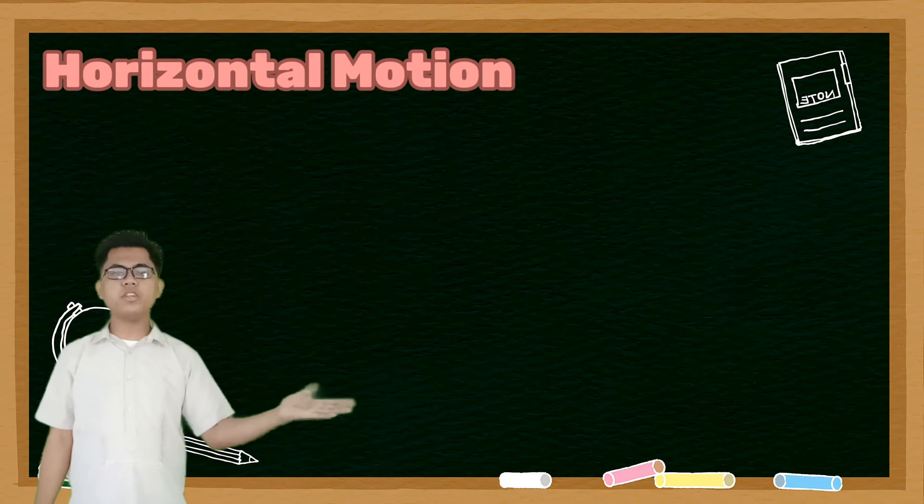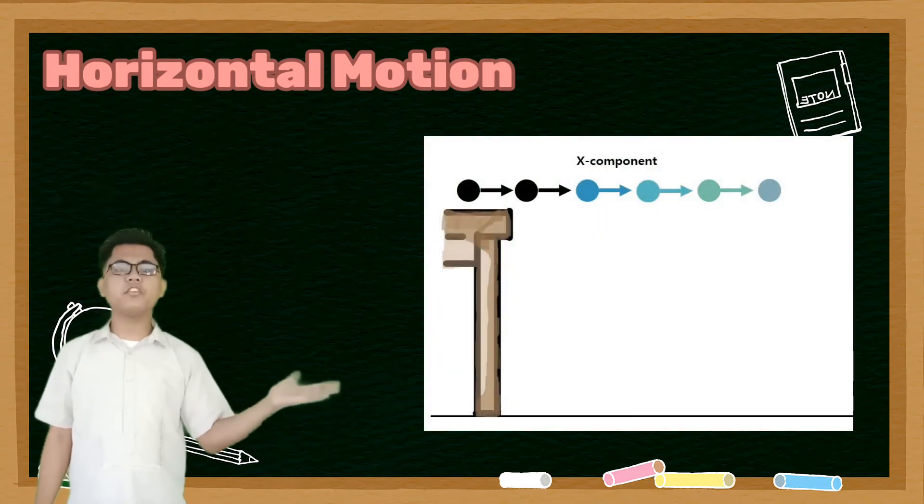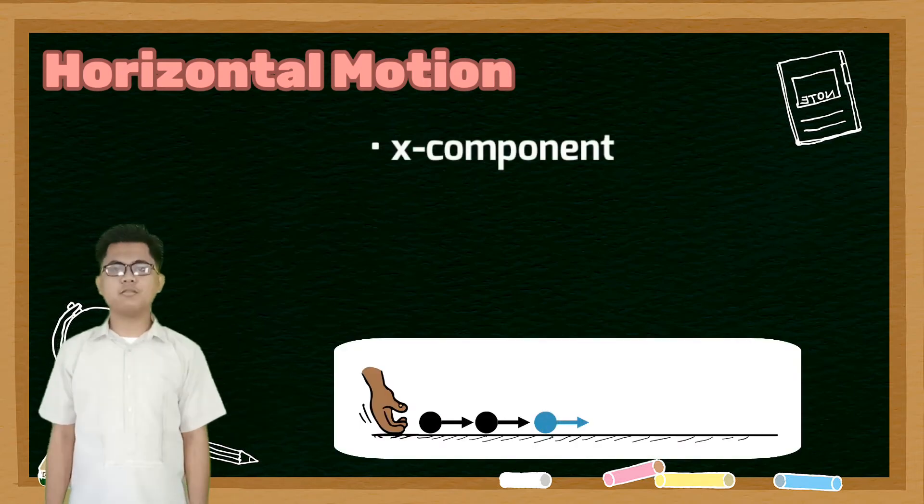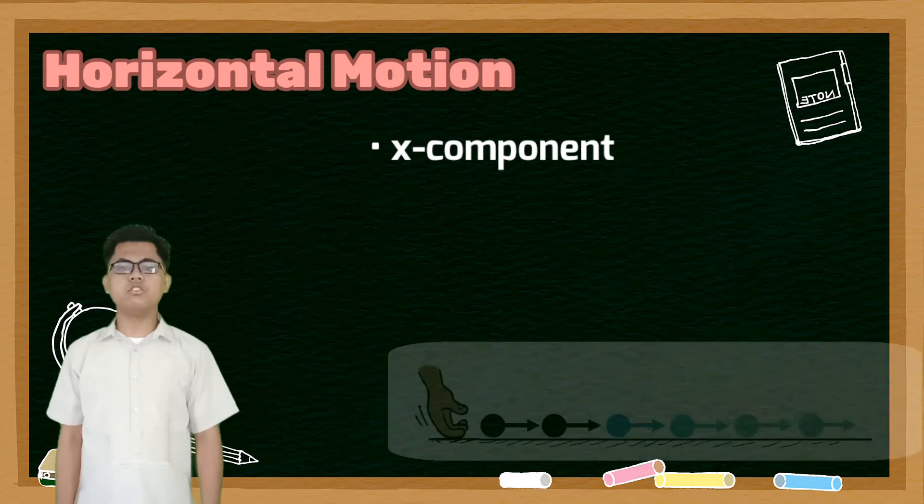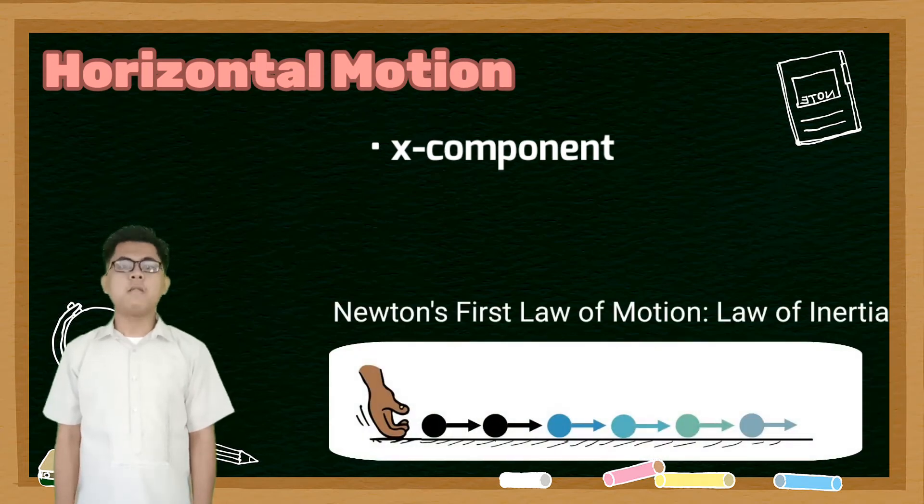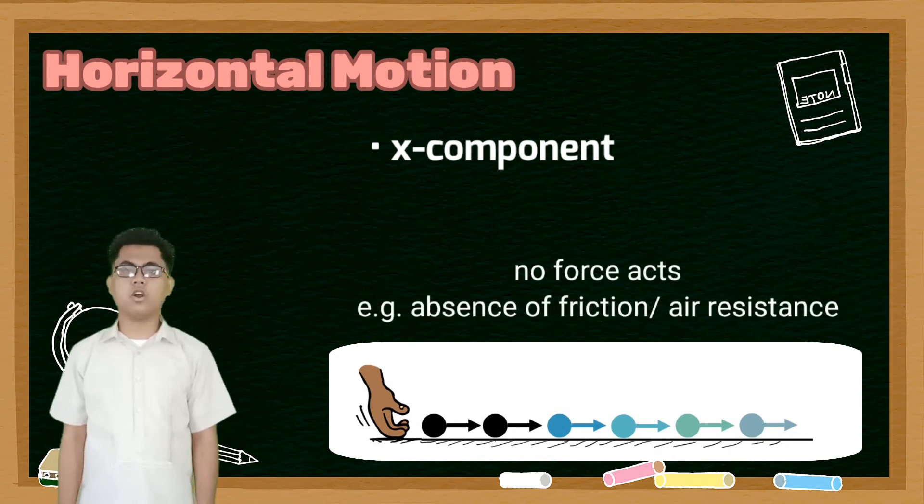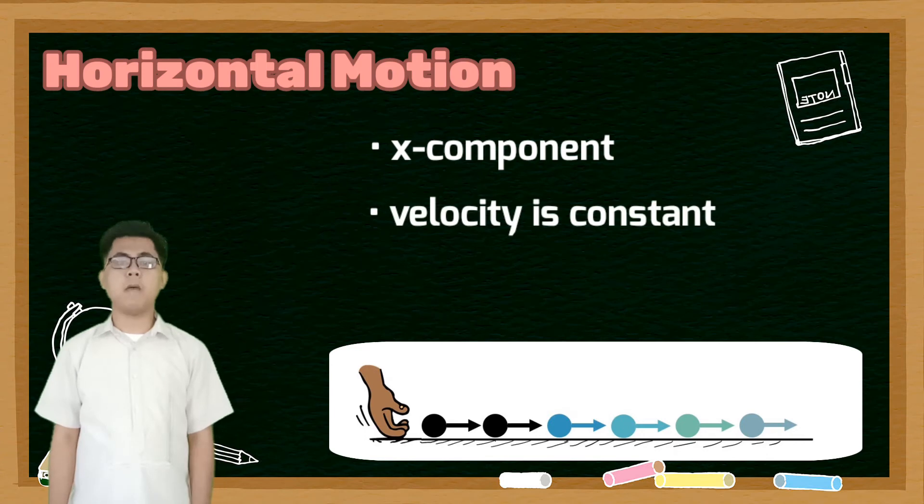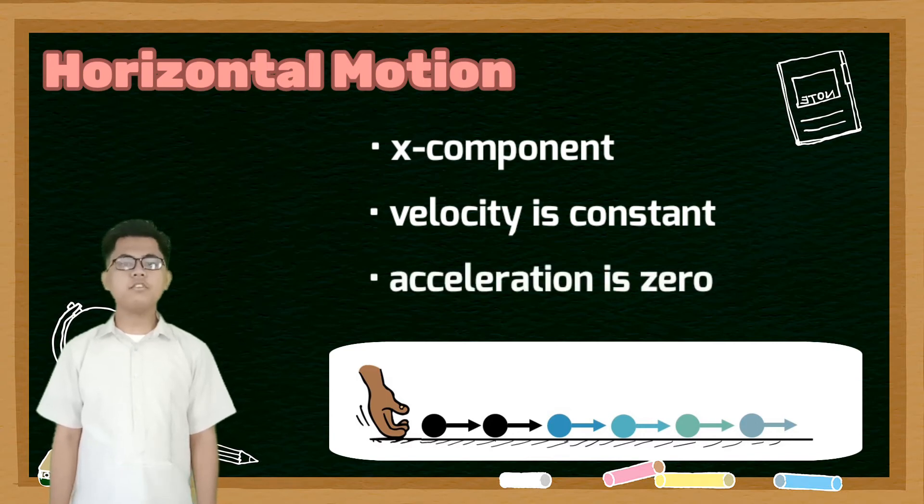The X component of a projectile is its horizontal motion. Suppose we roll a ball on a flat smooth surface. According to the law of inertia, the ball will continue to move forever if there are no forces acting on it. And since there are no forces acting on it, its velocity is constant. Meaning its initial speed and final speed are the same. Therefore, the acceleration of the ball is zero.